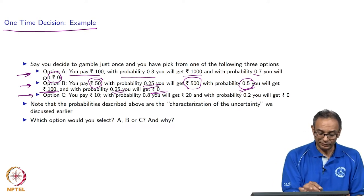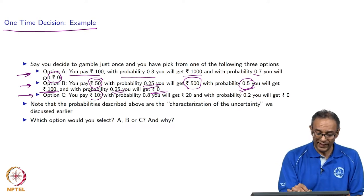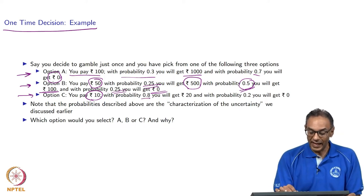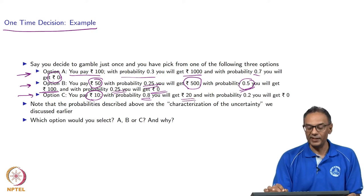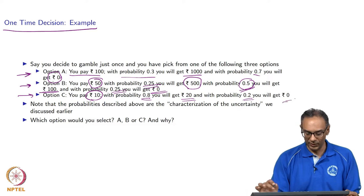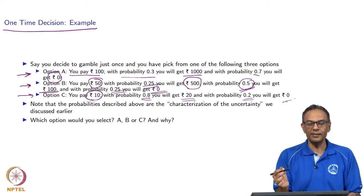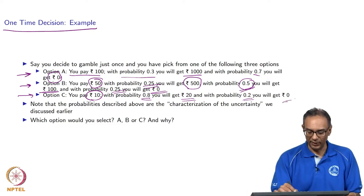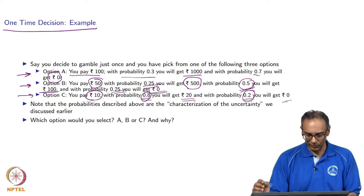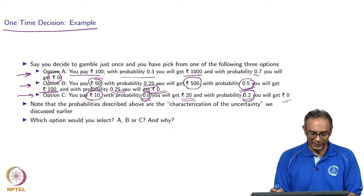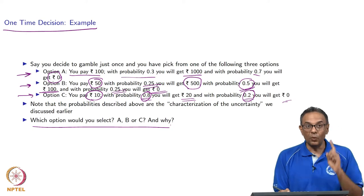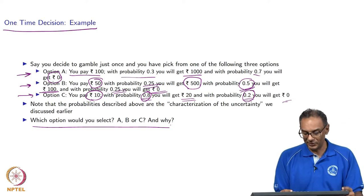The third option: you pay 10 rupees — much lower than 100 or 50 — but there is an 80 percent chance you get 20 rupees back, and a 20 percent chance you get nothing. In other words, you gain 10 rupees with probability 0.8 and lose 10 rupees with probability 0.2. The question is: which option would you select, given you can only gamble once?